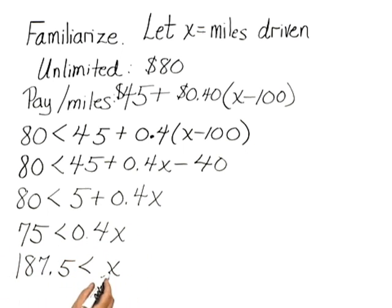Now remember, X was the number of miles driven. So when the number of miles driven is greater than 187.5, the unlimited plan would be less expensive. We can check by verifying our calculations again, maybe checking a number that's greater than 187.5 and seeing if the unlimited plan is less expensive.